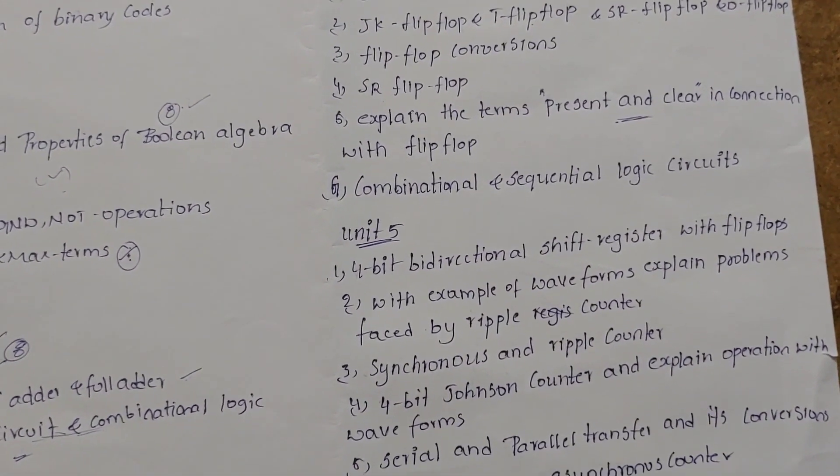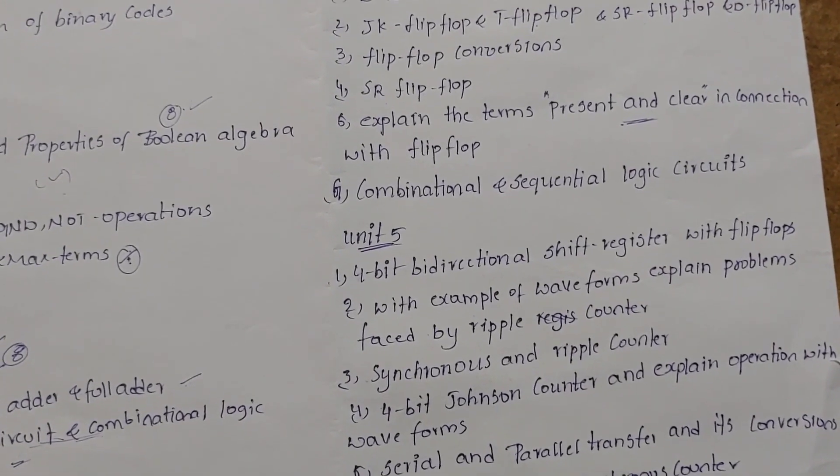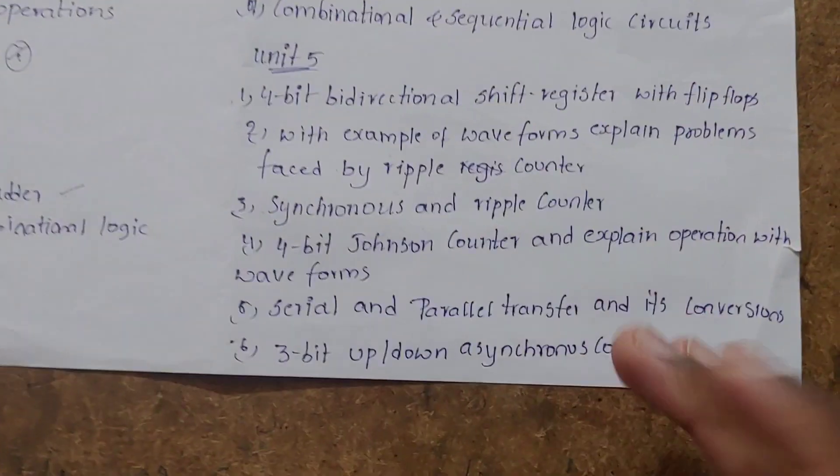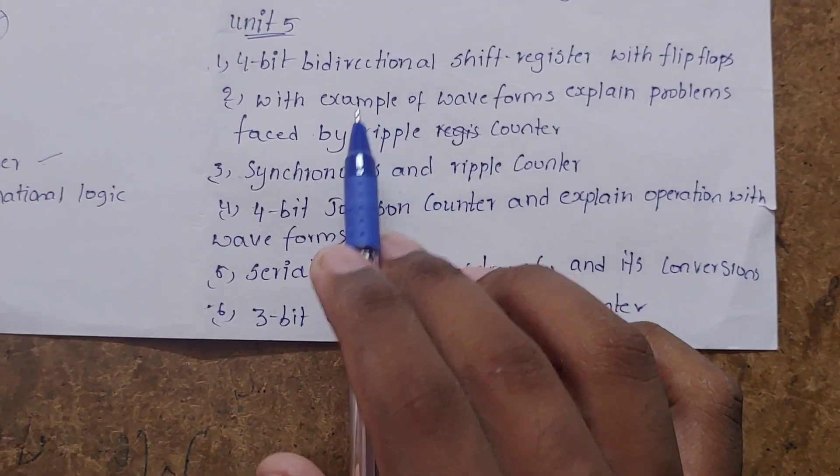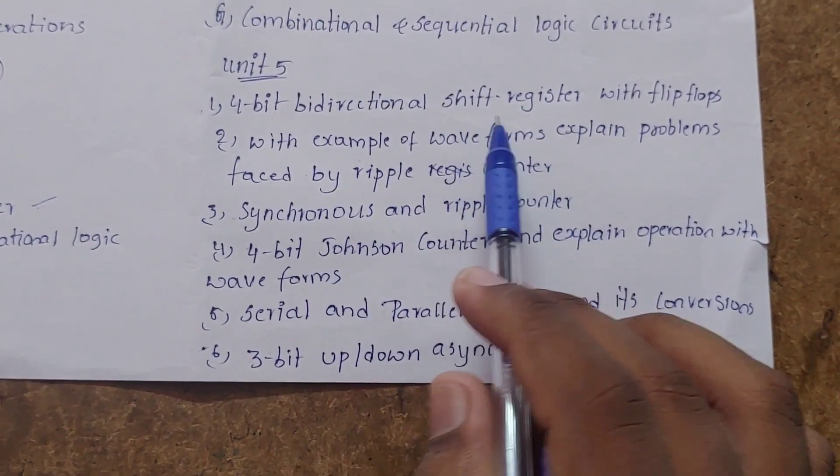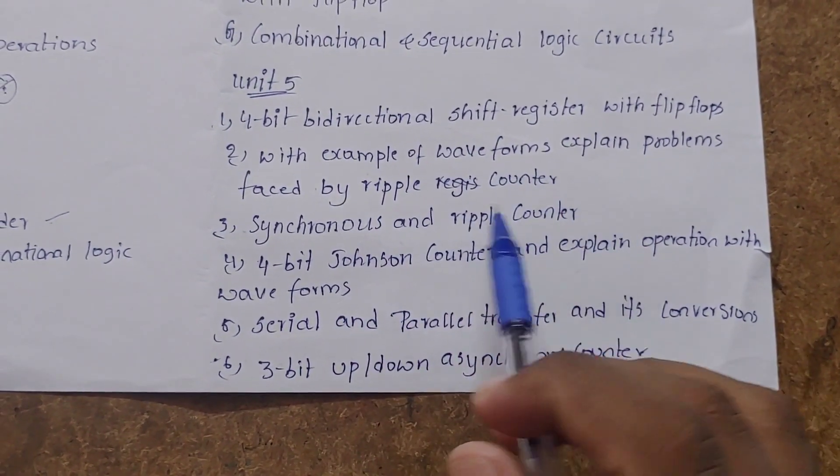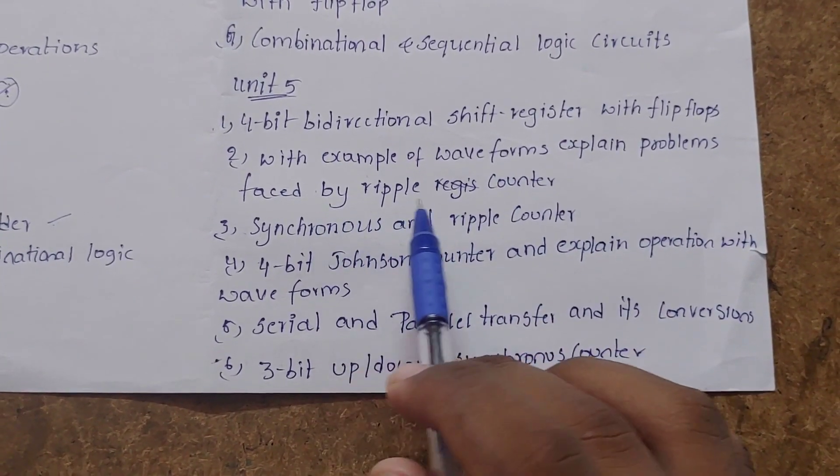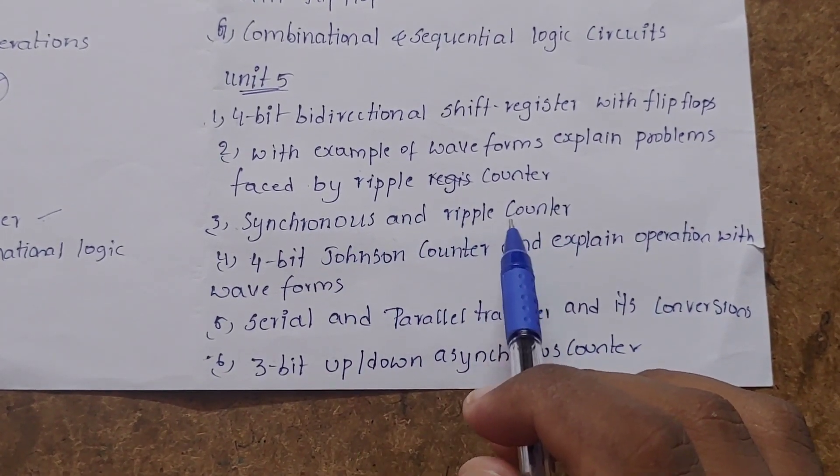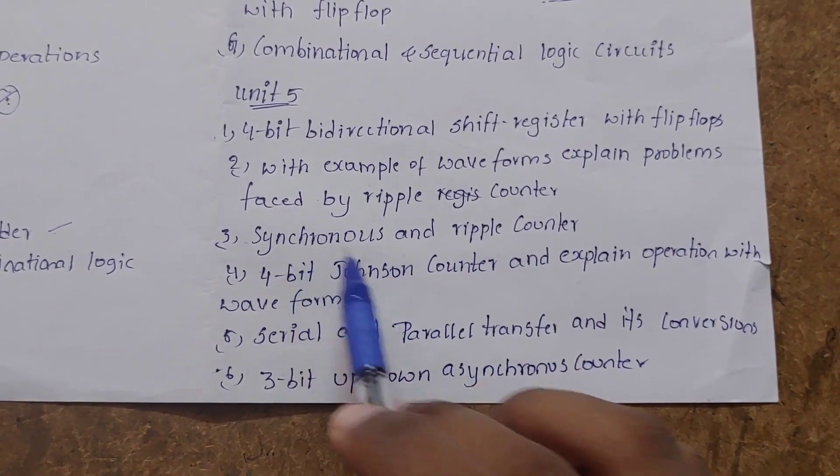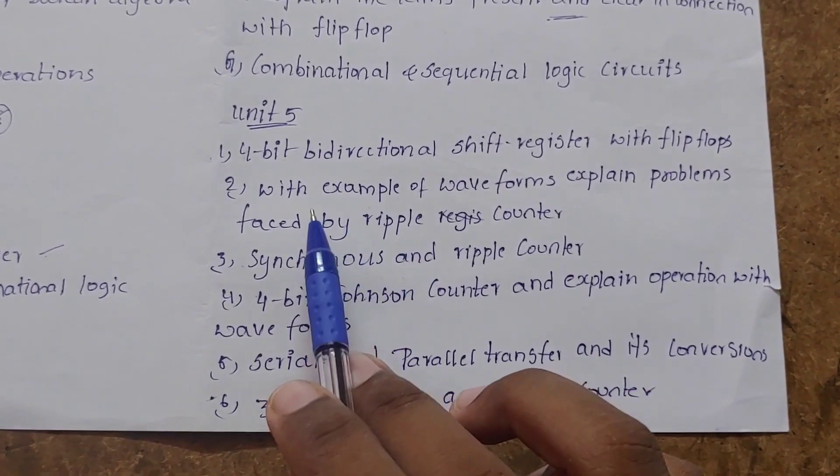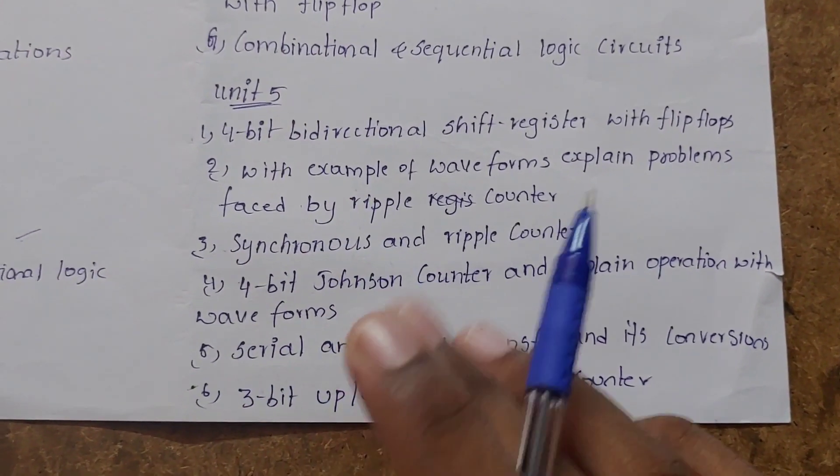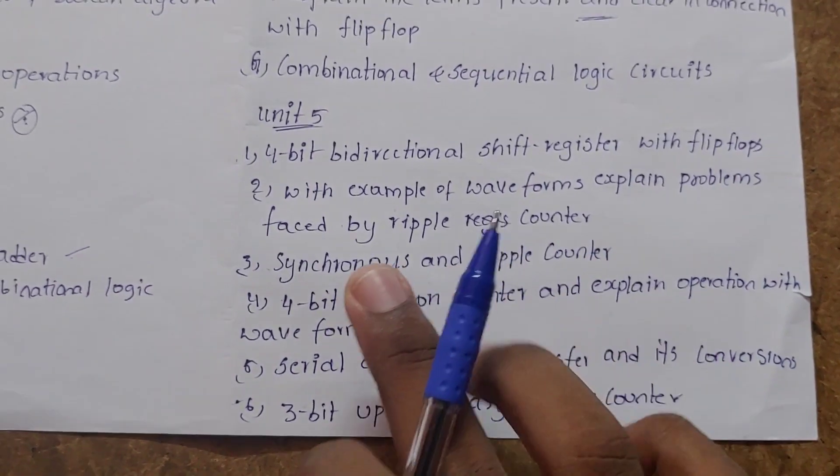You can use unit 4 for bidirectional shift registers with example of waveform section, problems with ripple counters. Synchronous and asynchronous key differences are there. So there are synchronous and asynchronous differences.